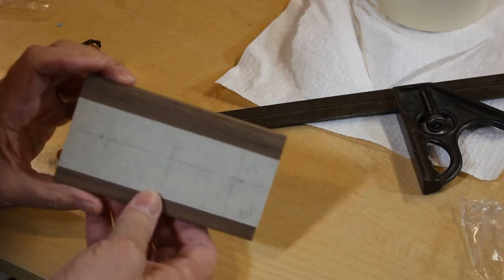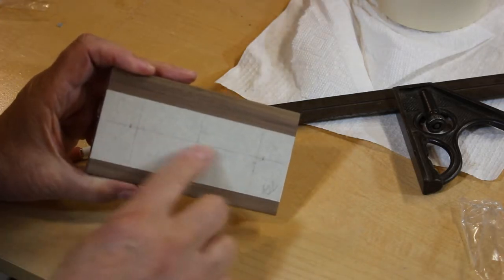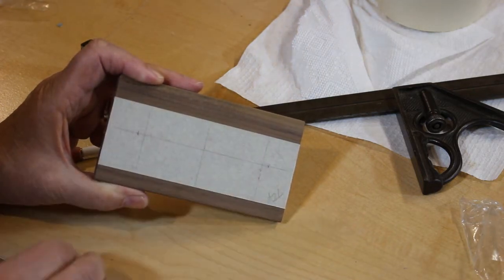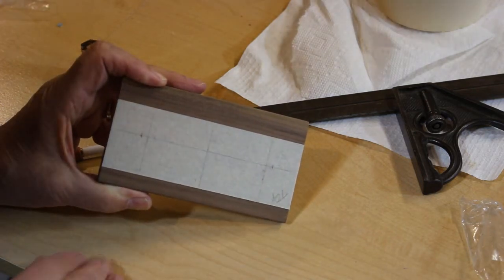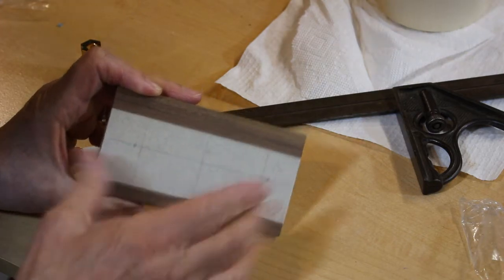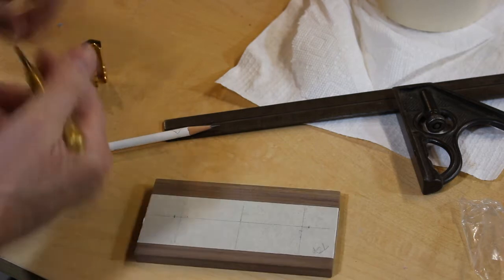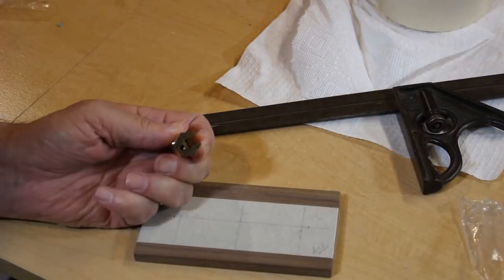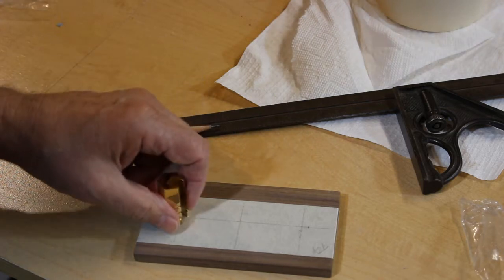So what I've done is I've marked the center line. I've marked three and a half inches, which is the width of a business card. Then I've come over three-sixteenths of an inch, and that's for the screw that goes into the bottom of this little brass standoff.